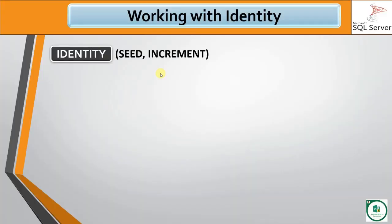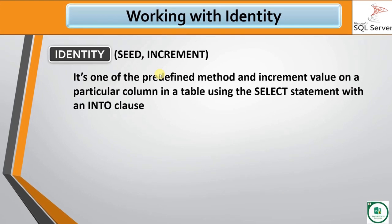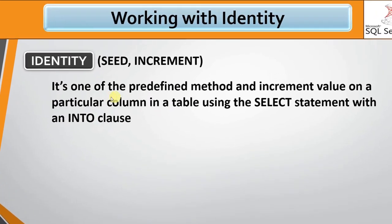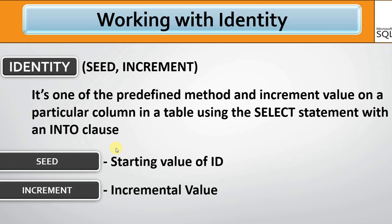If you want to create a database, you need to know the identity function with two parameters: Seed and Increment. The identity function is one of the pre-defined methods in SQL. It is used to increment one value on a particular column in a table by using the SELECT statement with an INTO clause. The seed is the starting value of the ID, and increment is the incremental value between IDs.